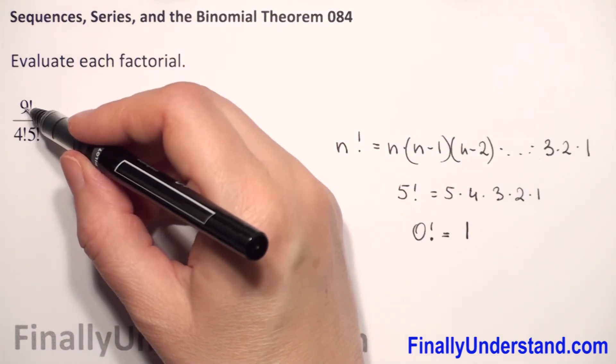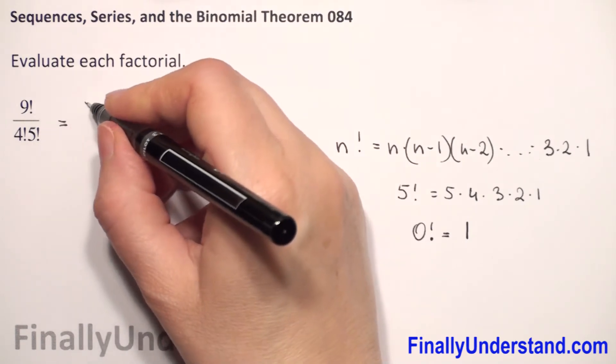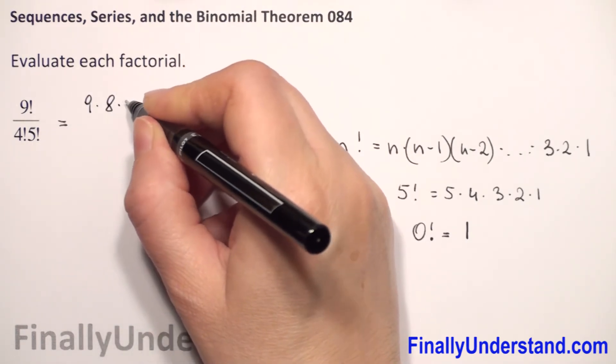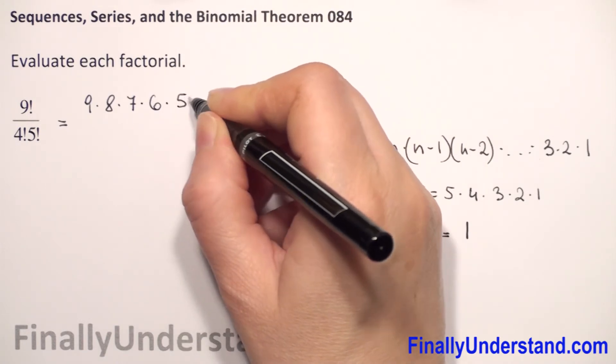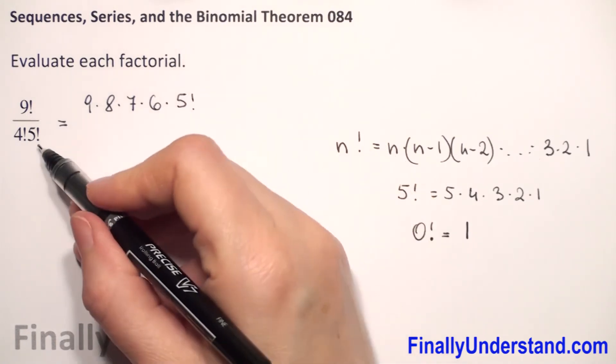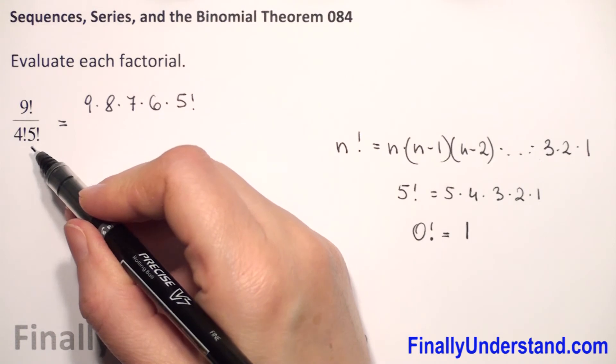I will rewrite 9 factorial as 9 times 8 times 7 times 6 times 5 factorial. Why 5 factorial? Because I have 5 factorial in the denominator.